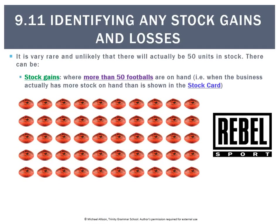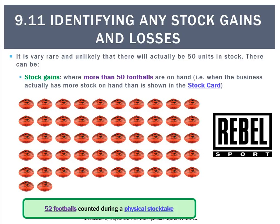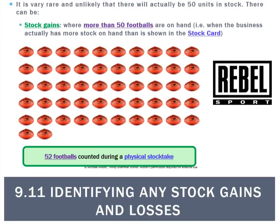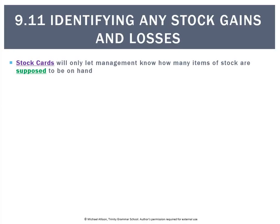There could be another situation — maybe we have a stock gain. That kind of seems less likely, but it does happen. In this case, instead of 50 footballs, we have 52, and that was identified during a stock take. We count them up and there are more than there should be.